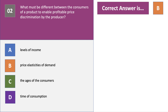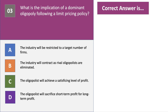Question number three. What is the implication of a dominant oligopoly following a limit pricing policy? Have a go at question number three please — press the pause button and press play when you want to go through the answer.